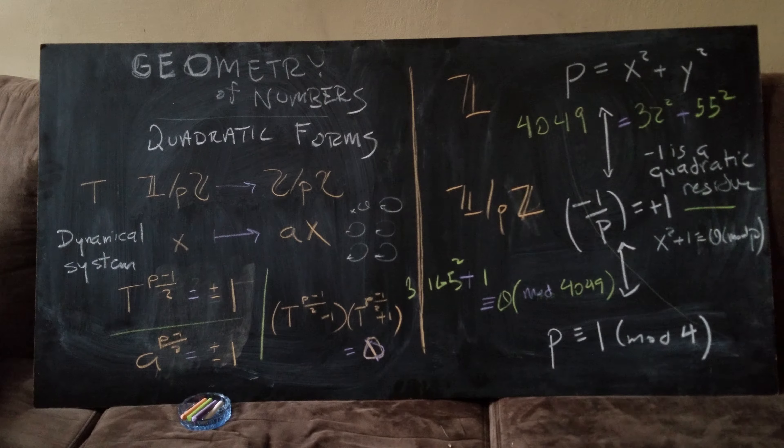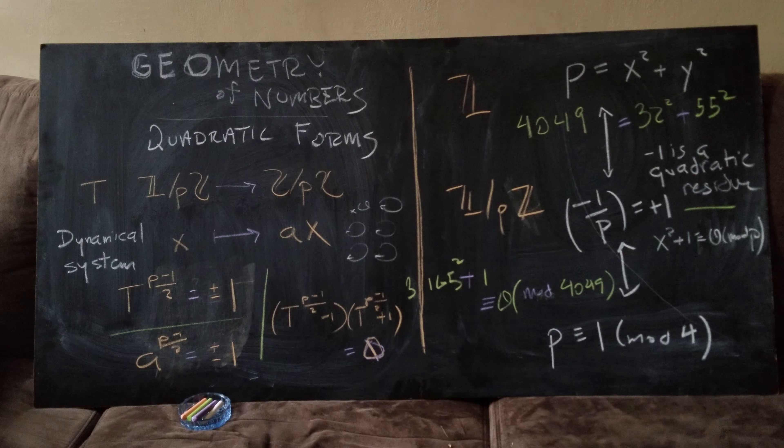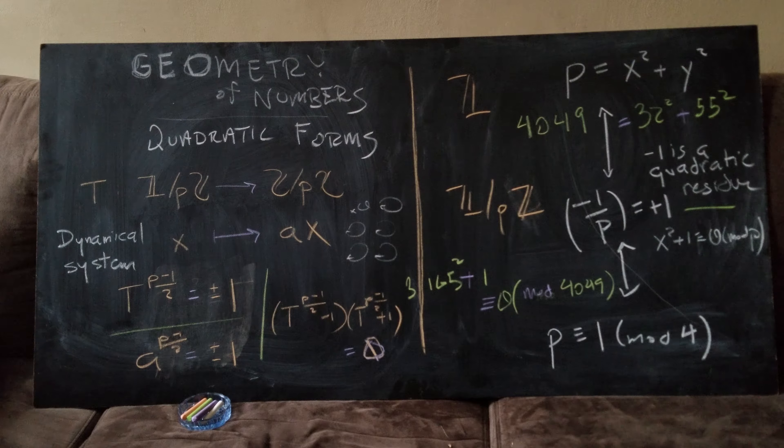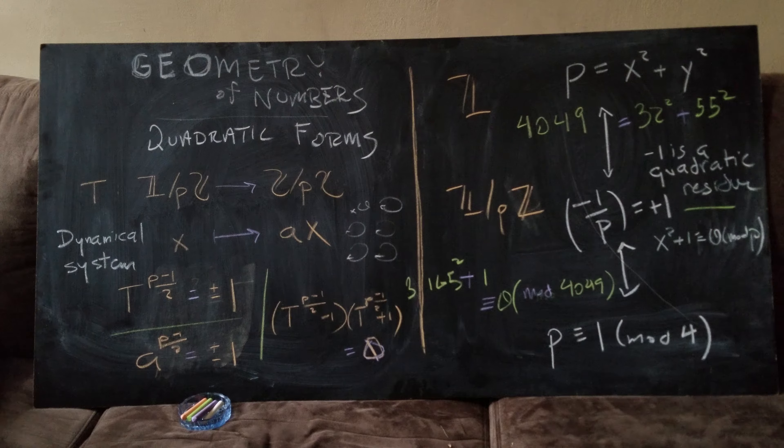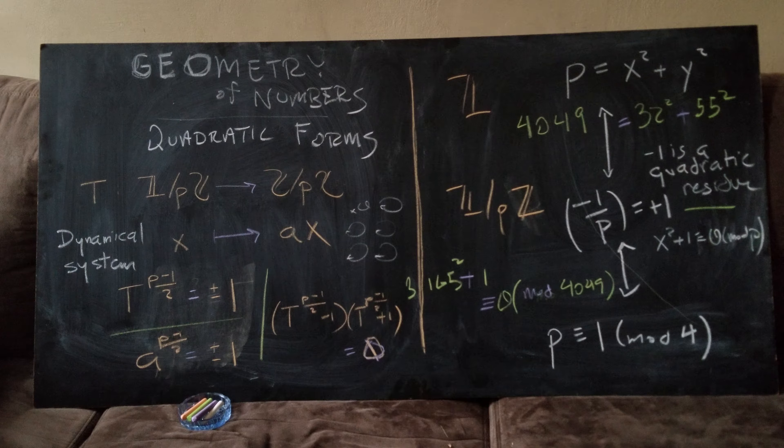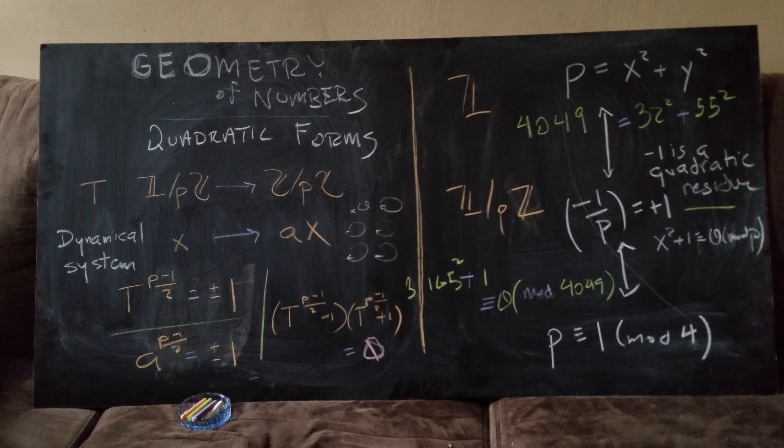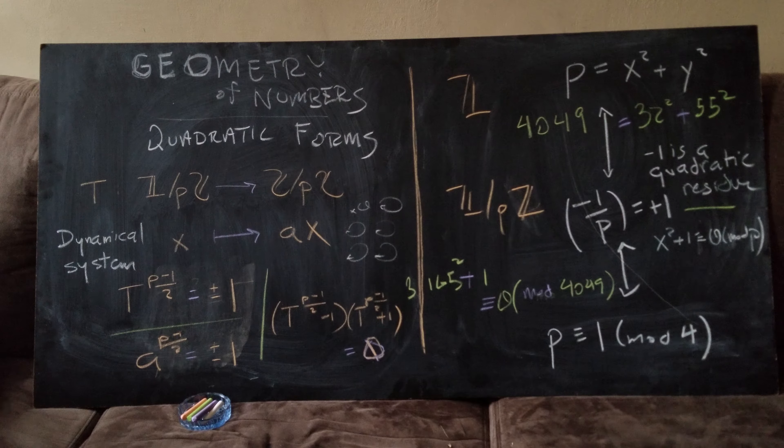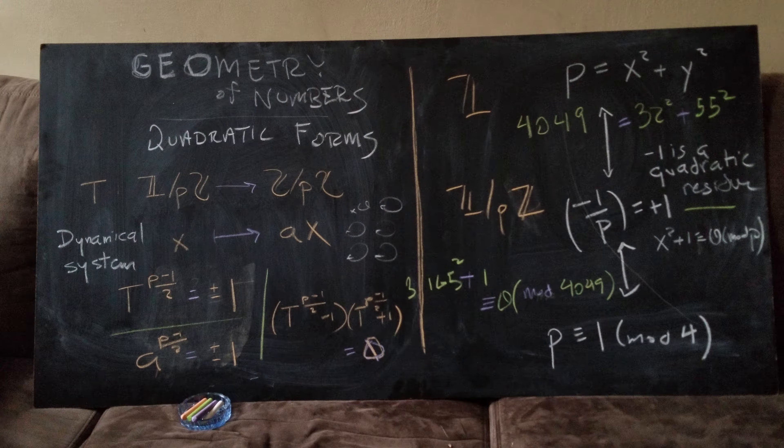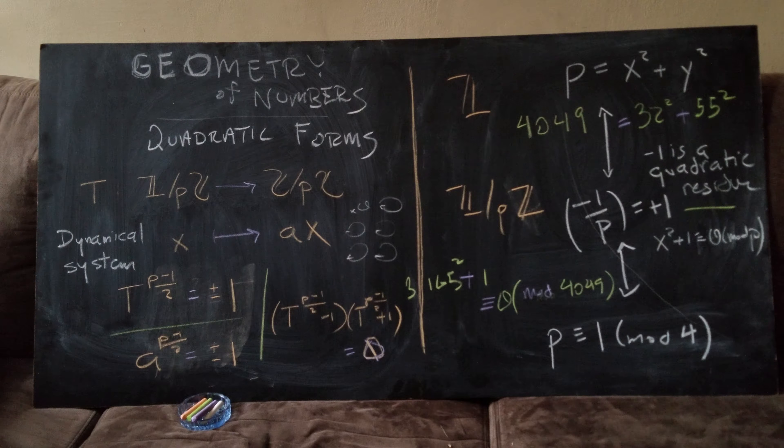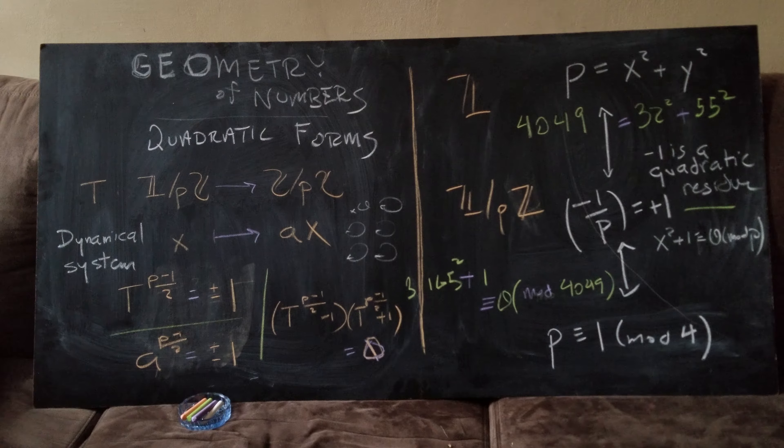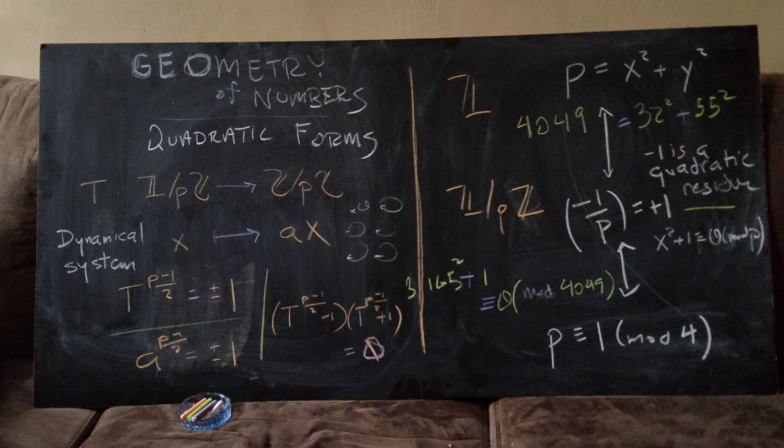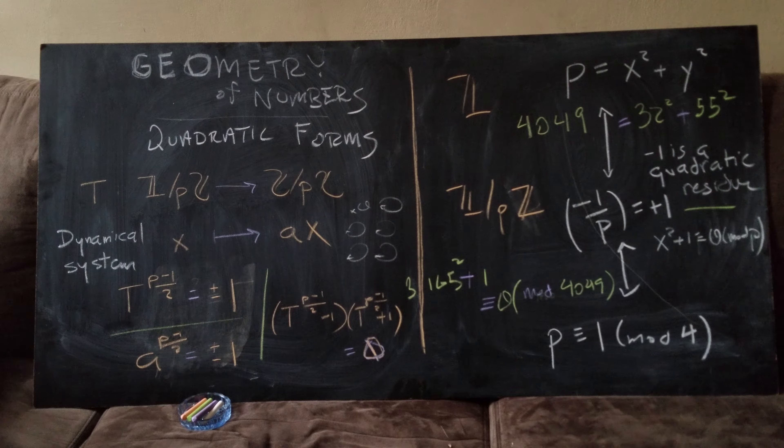So the next question is how do we turn our mod p result into a sum of two squares result? We have a p as a mod p solution to x squared plus one. Who cares? Because there are infinitely many numbers, we could be writing a multiple of p as the sum of two squares. How do we get a reduction to p?